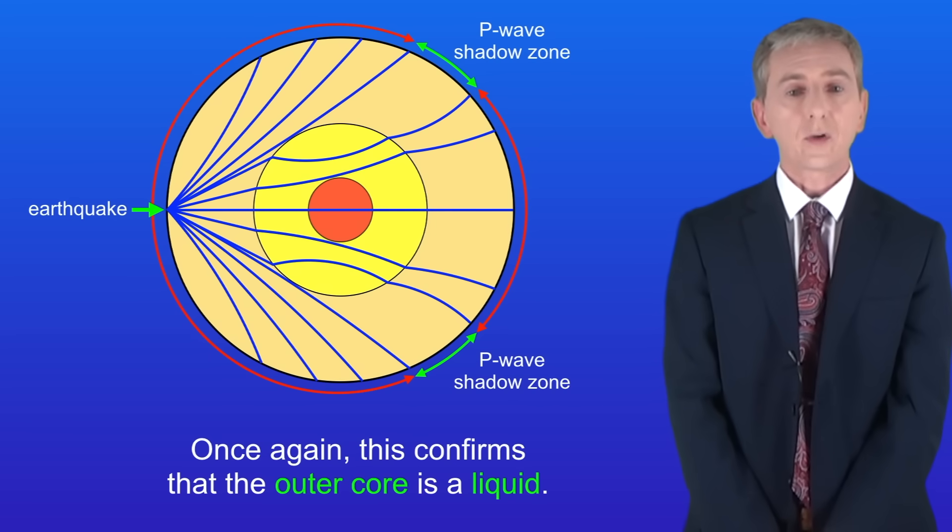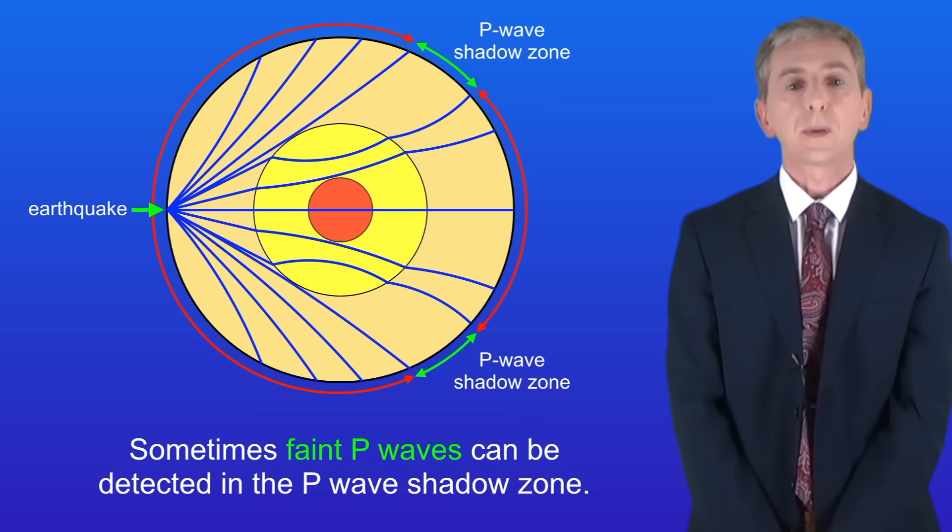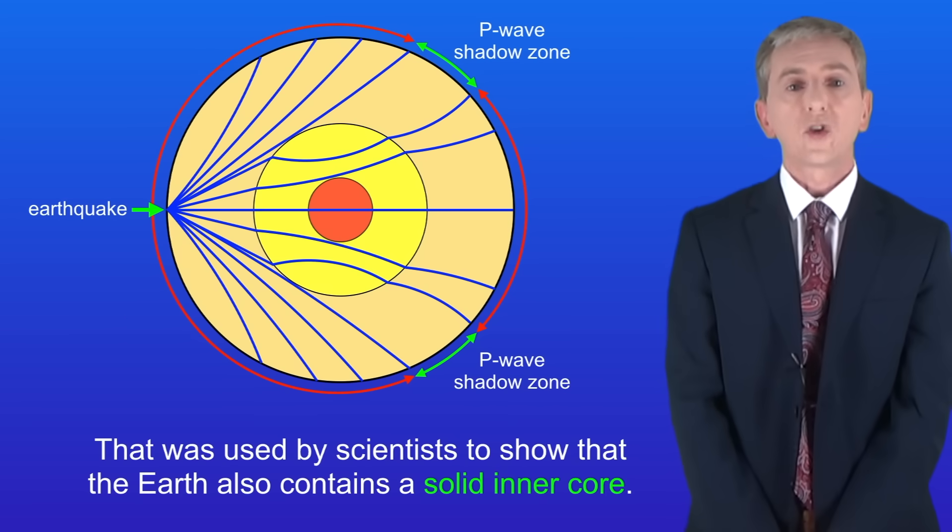Once again this confirms that the outer core is a liquid. Now sometimes faint P waves can be detected in the P wave shadow zone and that was used by scientists to show that the earth also contains a solid inner core.